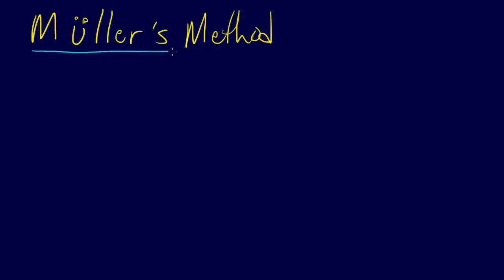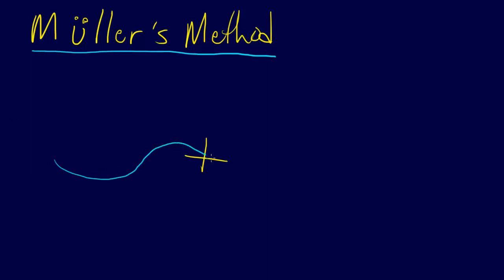All right, so we're ready to introduce Mueller's method. This method is actually quite simple. In order to introduce Mueller's method, the first thing I'm going to do is show you something that we've seen before. Let me draw my happy little function here, so we have some function, and let's say we're doing the secant method.